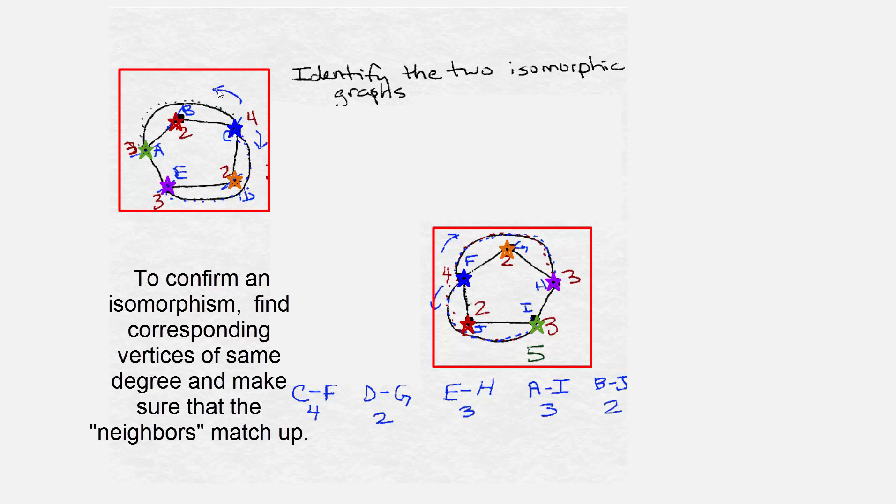But more important even, well just as important as the degree, is the fact that their next door neighbors are still the same. So we definitely have an isomorphism between the first graph and the fourth one.